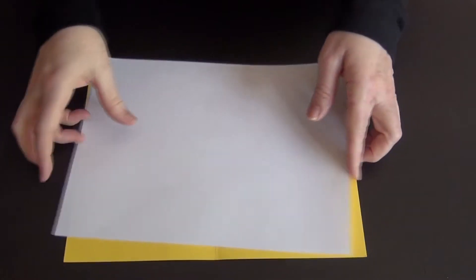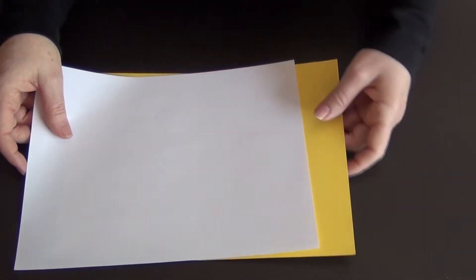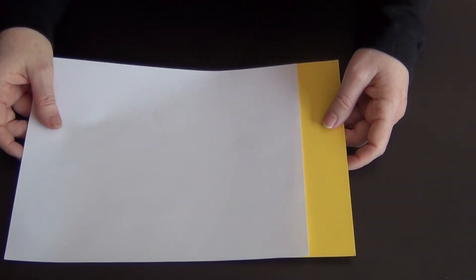We'll start with two sheets of paper, one for the inside and one for the outer cover. If you have the option, a thin piece is better for the inside and a little thicker cardstock for the outside is better.